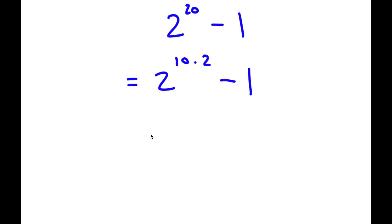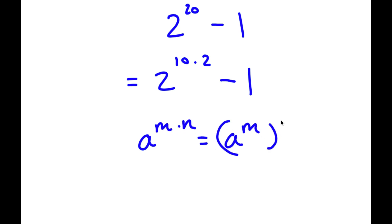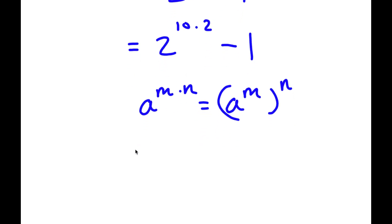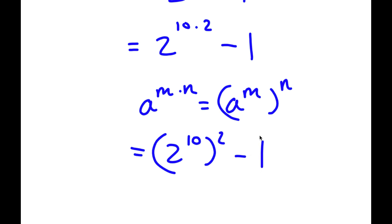Now if I have something in the form a to the power of m times n, this is equal to a to the power of m to the power of n. So 2 to the power of 10 times 2, I'm going to rewrite as 2 to the power of 10 to the power of 2, and I have this minus 1.